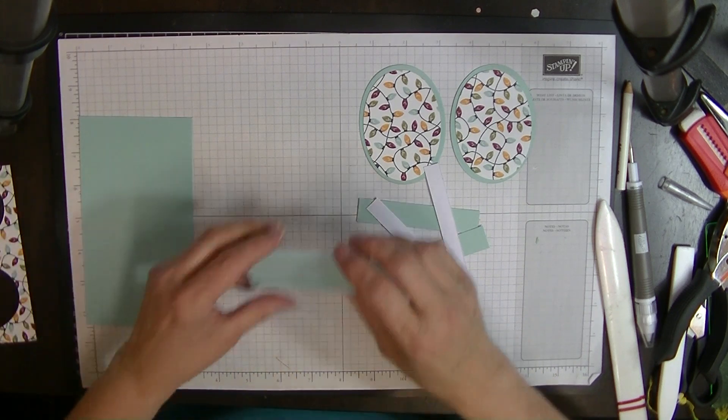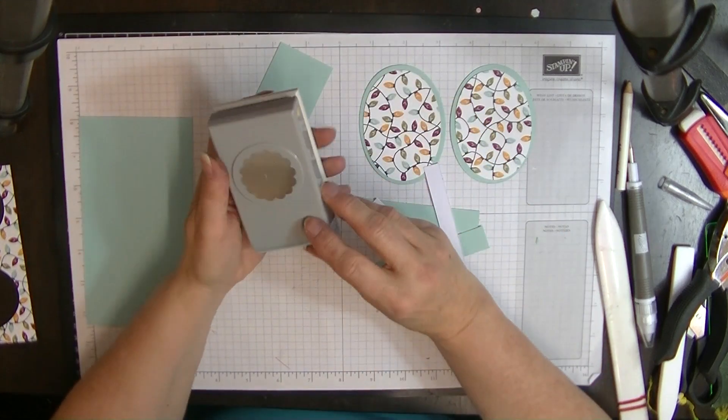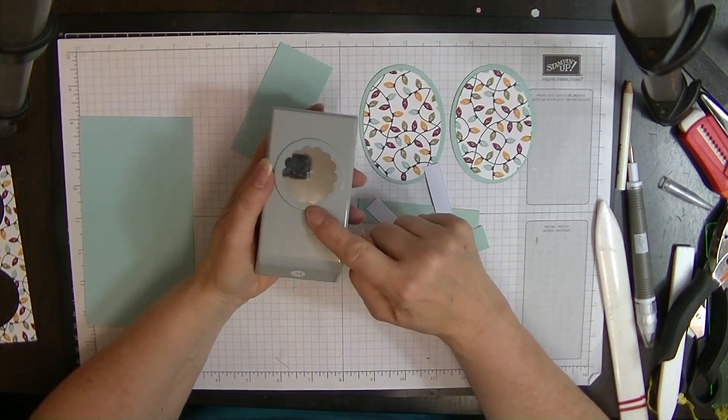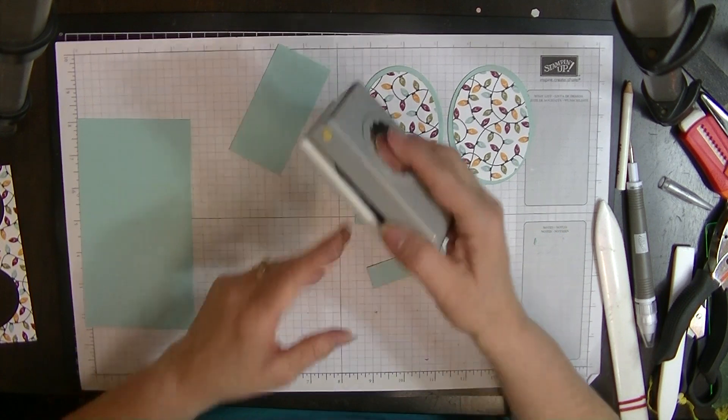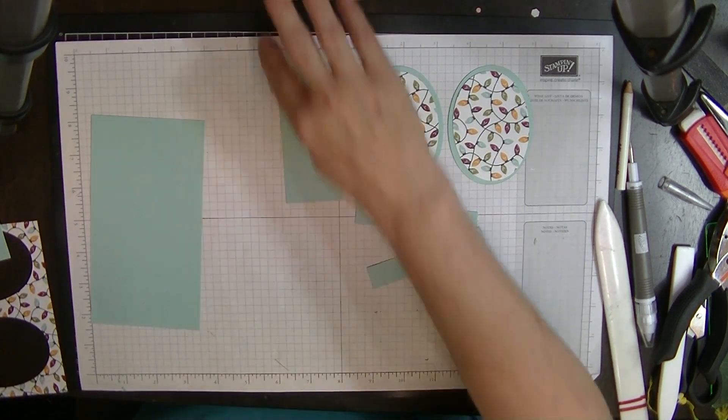Then you'll need two strips of card that measure three and three quarter inches by three quarters of an inch and two more in white that measure three and a half by half an inch.